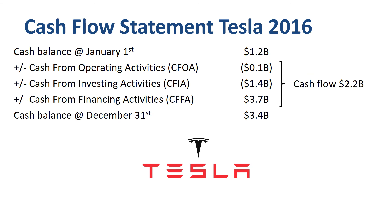Back from the detail to the high-level cash flow statement overview. Tesla attracted financing in the form of debt and equity, which allowed them to invest. Tesla ended the year with more cash than they started with, to continue investing and running everyday operations.